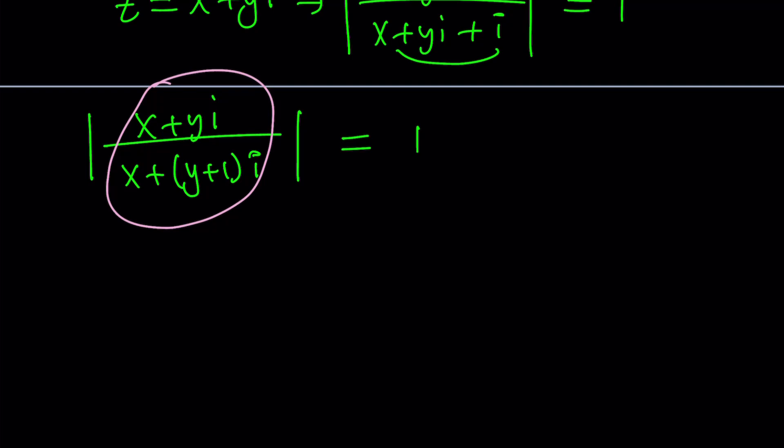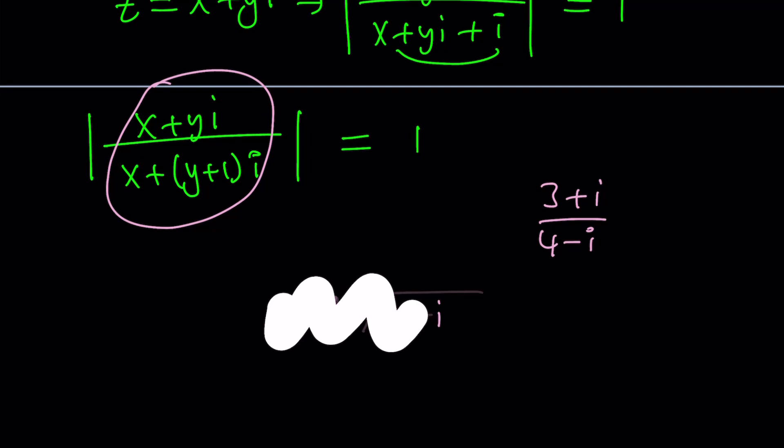When you have a complex number inside the absolute value, you want it in the simplest form. How do we write it in simplest form? How do you divide complex numbers? You can't divide a complex number into another one like long division. Like four goes into three how many times? It's not going to work. It's different because when you divide two complex numbers you get another complex number.